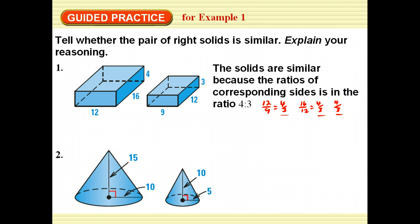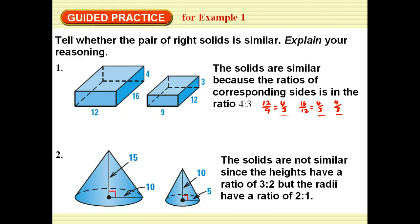What about this one? Well, we're still talking about those same things. We'll compare our radiuses and our heights. And it turns out that they're not the same because the heights is fifteen to ten, which is three to two. And the radius is ten to five, which is two to one. So those are not similar figures.